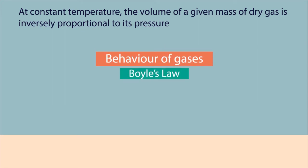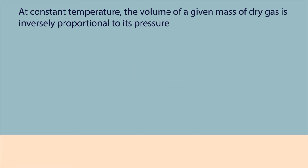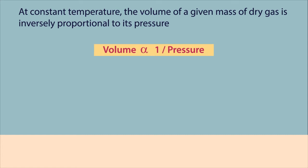Boyle's Law states that at constant temperature, the volume of a given mass of dry gas is inversely proportional to its pressure. That is, at constant temperature, if pressure is increased, volume of gas decreases, and if pressure is decreased, volume of gas increases. This is vice-versa with variation of volume.